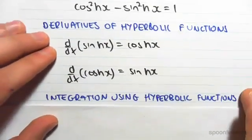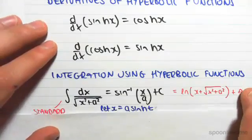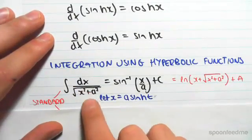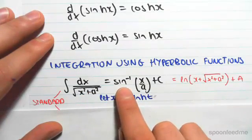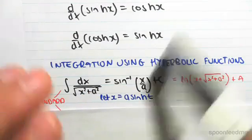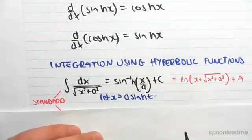Okay, now integration using hyperbolic functions. We're going to have the integral of dx on the square root of x squared plus a squared equals inverse sinh of x on a plus c.